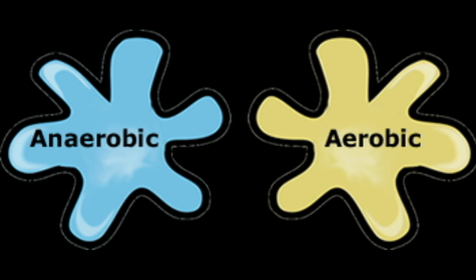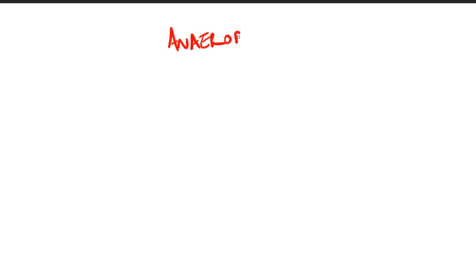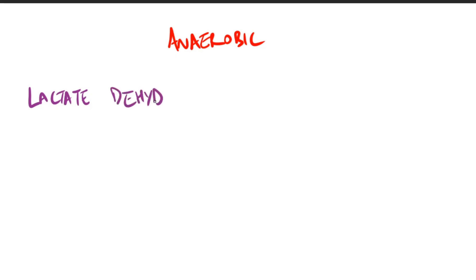Anaerobic glycolysis can occur without the participation of oxygen. It allows the production of ATP in tissues that lack mitochondria — for example, red blood cells — or in cells deprived of sufficient oxygen. When we are running and exhausted and oxygen supply runs out, our body starts anaerobic glycolysis to supply our muscles with a bit of energy to keep going.